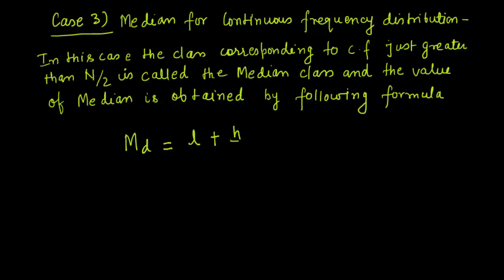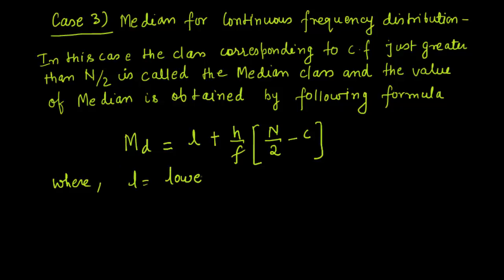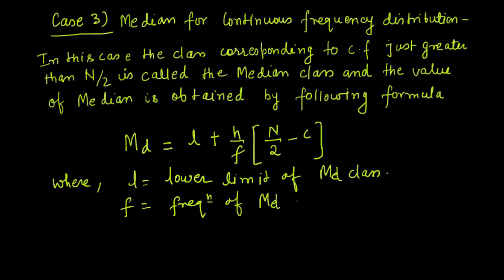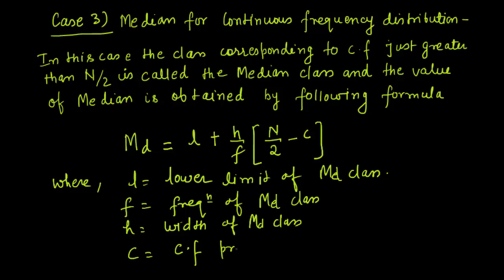Md = l + (h / f) × (n/2 − c), where l is the lower limit of the median class, f is the frequency of the median class, h is the width of the median class, c is the cumulative frequency preceding the median class, and capital N is the sum of all frequencies where i goes from 1 to n.